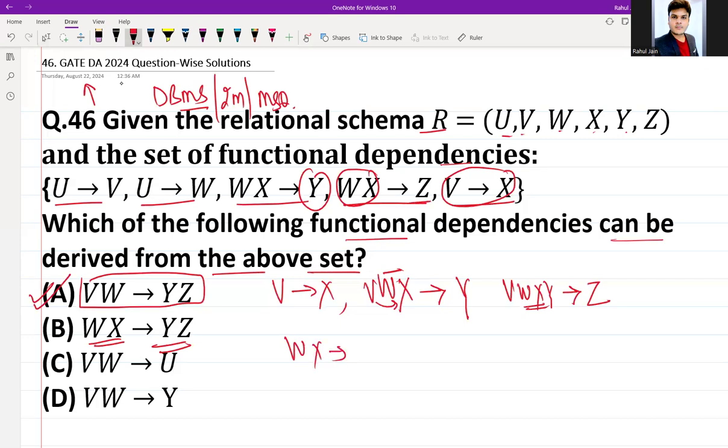WX can derive Z together, and we require Y more. So Y can be derivable using WX itself. WX itself can generate Y also. So using this, we can say that option B is also possible.